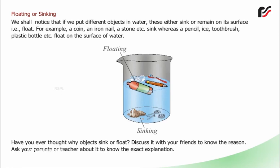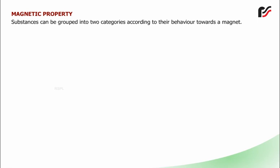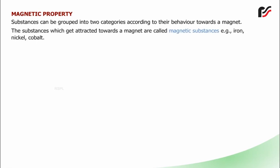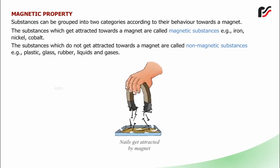Magnetic Property: Substances can be grouped into two categories according to their behaviour towards a magnet. Substances which get attracted towards a magnet are called magnetic substances, e.g. iron, nickel, cobalt. Substances which do not get attracted towards a magnet are called non-magnetic substances, e.g. plastic, glass, rubber, liquids and gases. Nails get attracted by a magnet.